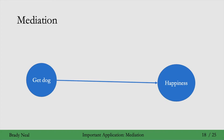So what is mediation? Say that I know that getting a dog has some causal effect on my happiness, but part of having a dog means walking your dog, and having more exercise has an effect on happiness. So I want to know what amount of that effect is just due to walking and what amount of it is due to other stuff related to having a dog.